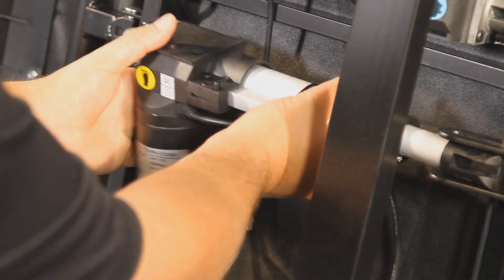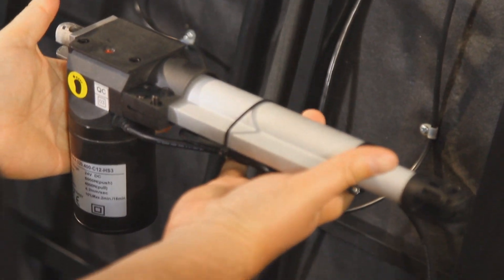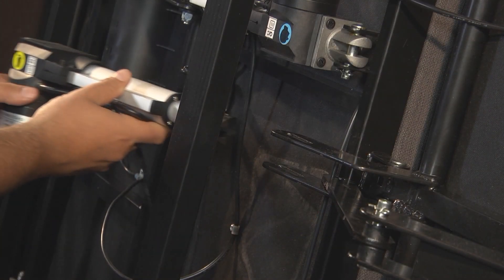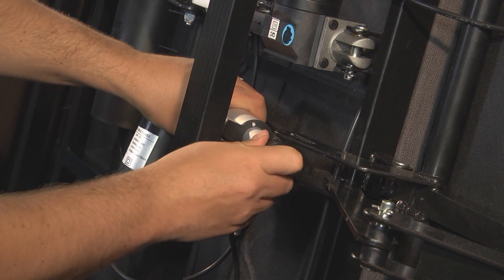Once the old actuator has been removed, place it in the box your new actuator came in so you can either return or dispose of it. To install the new actuator, you will simply reverse the process you used to remove it.